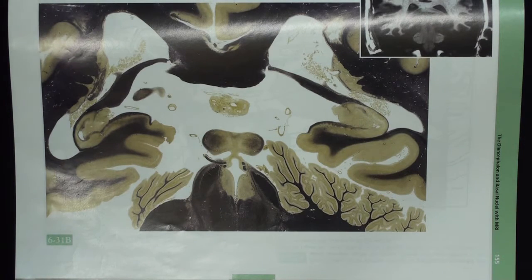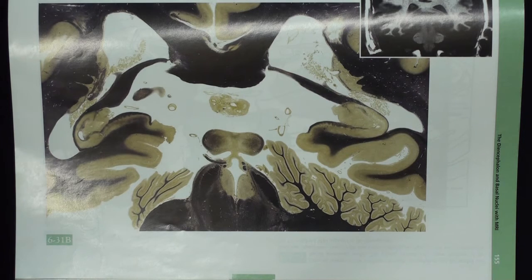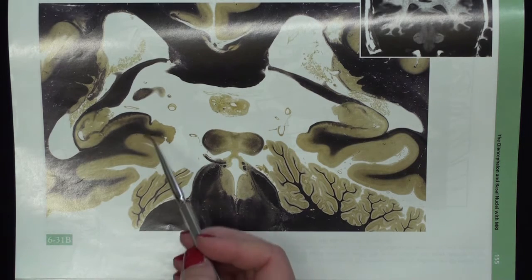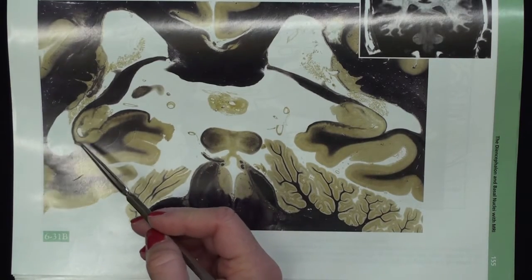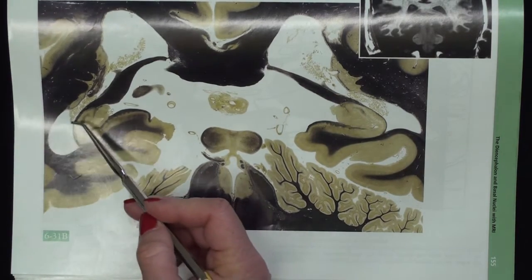Turn from figure 636 over to figure 631 in your atlas. Again here we can see the hippocampal formation. We can see the alveus and the fimbria.